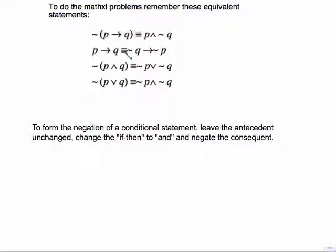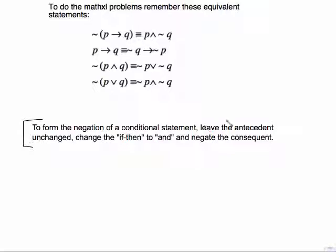You'll do several problems in Math Excel as well as on this video. To do those, remember these equivalent statements: the negation of the conditional becomes a conjunction; the contrapositive — switch and negate — is still a conditional; and the two DeMorgan's Laws. In words: to form the negation of a conditional, leave the antecedent unchanged, change the if-then to AND, and negate the consequent.